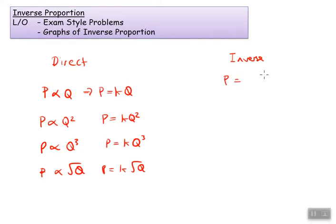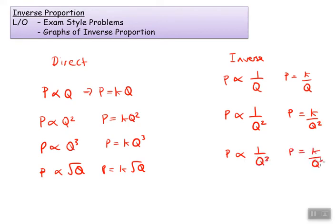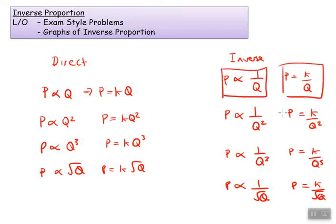Inversely proportional, so P is inversely proportional, that means the formula is going to look like this: K over Q. So if it was inversely proportional to 1 over Q squared, that's K over Q cubed. If it's 1 over square root of Q, that means it's K over square root of Q. So this is the description, and this is what the formula is going to look like. Description, formula, description, formula.